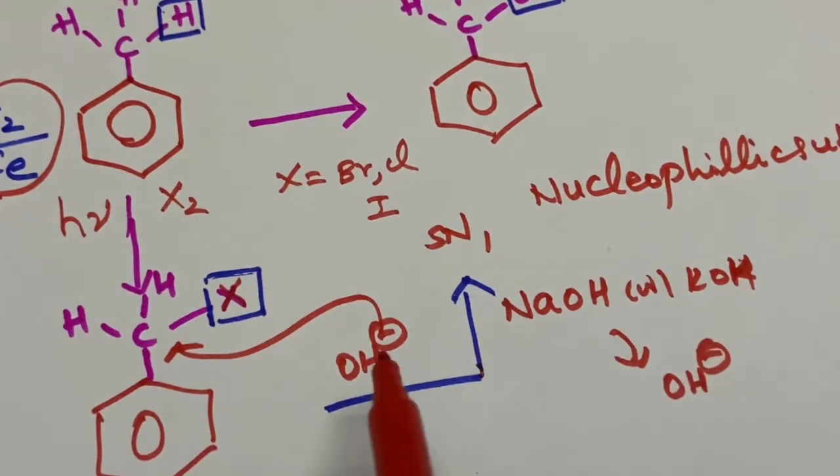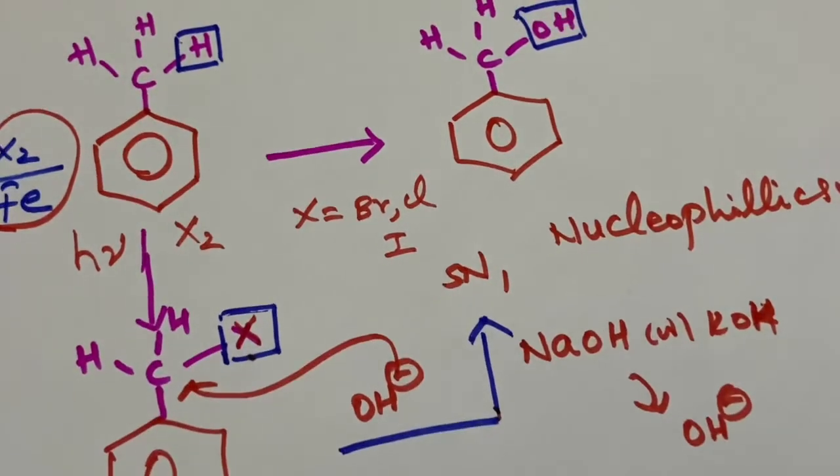So if you use NaOH or KOH, your halogen will be replaced by the hydroxyl group.